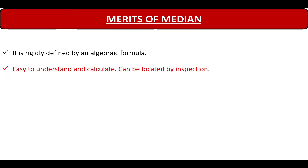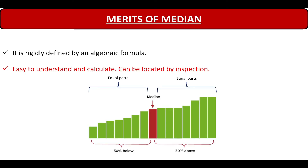Next, it is easy to understand and calculate, and can be located by inspection. Median is centrally located, so 50% of the values will be below it and 50% of the values will be above it. It will divide the distribution into two equal parts, that's why we can locate it by inspection also.